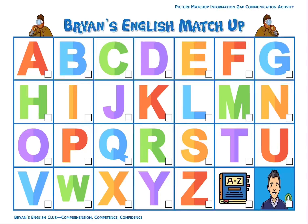Number one: K. Number two: T. Number three: H. Number four: G. Number five: Z.